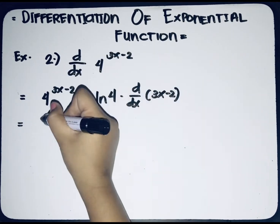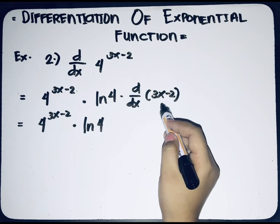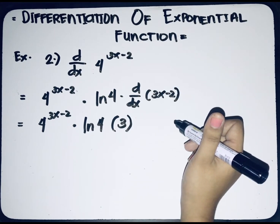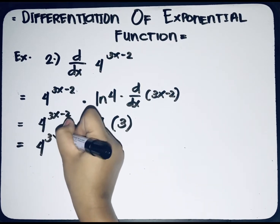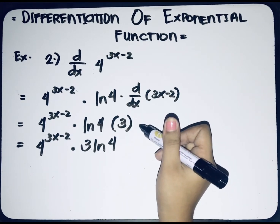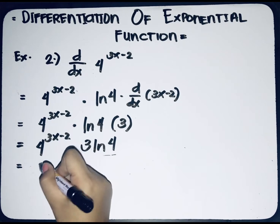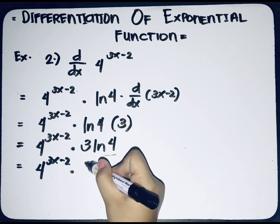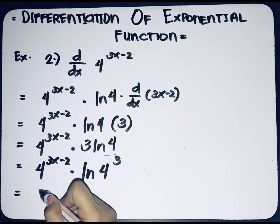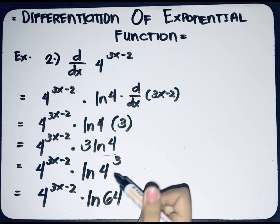Copy 4 raised to (3x − 2), multiplied by ln(4), and the derivative of (3x − 2) equals 3. Combining ln(4) and 3, we get 4 raised to (3x − 2) times 3·ln(4). By applying the identity from earlier, 3·ln(4) can be written as ln(4 raised to 3). Simplifying, 4 raised to 3 equals 64, so the final answer is 4 raised to (3x − 2) multiplied by ln(64).